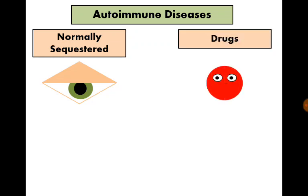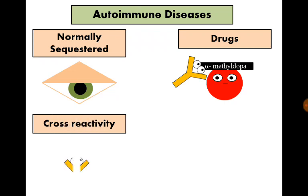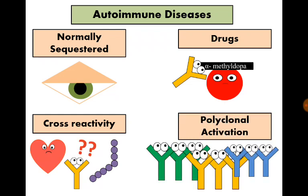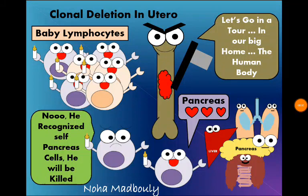Some drugs, like alpha-methyldopa, attach to cells like red blood cells, and in this case antibodies will destroy these cells. Cross-reactivity between similar antigens is another cause — an example is rheumatic fever that follows streptococcal infection. Polyclonal activation can also result in autoimmune diseases. Many thanks for watching; we hope you enjoyed immunity with us. Goodbye.